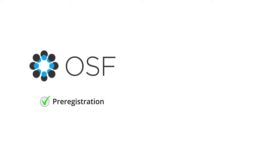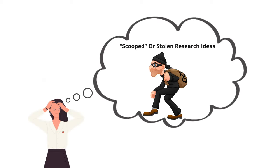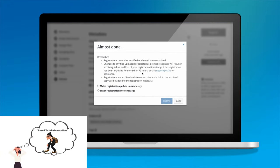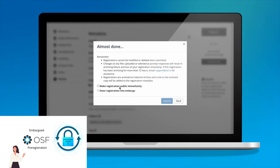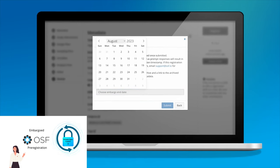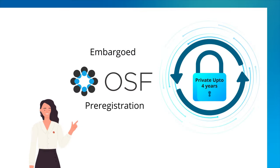Creating a registration before she begins the project helps Sophia if she decides to seek funding from funding agencies that require open science practices. Sophia has heard many stories about research ideas being stolen or scooped. If Sophia is worried about sharing her work or registration while it is still in progress, she can also embargo access or temporarily make her registration private for up to four years. While embargoed, Sophia can create an anonymized view-only link for sharing with potential reviewers or funders.